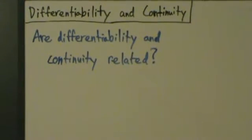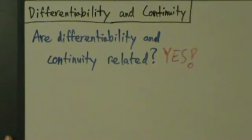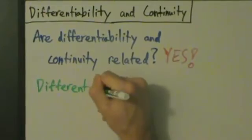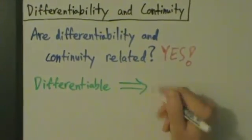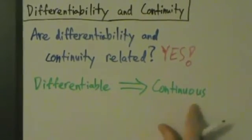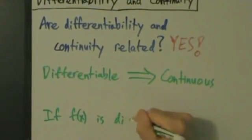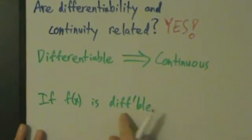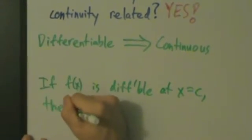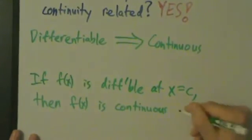So are differentiability and continuity related? Yes, they are. A known fact is that differentiable implies continuous — this double arrow here means implies. So if f(x) is differentiable at x equals c, then f(x) is continuous at x equals c.